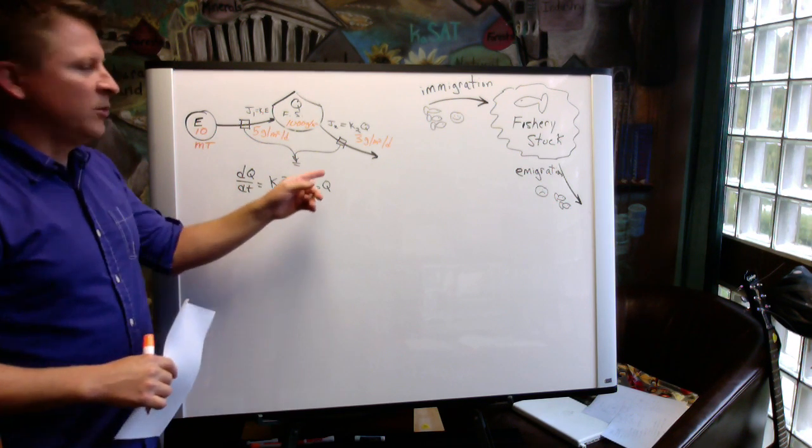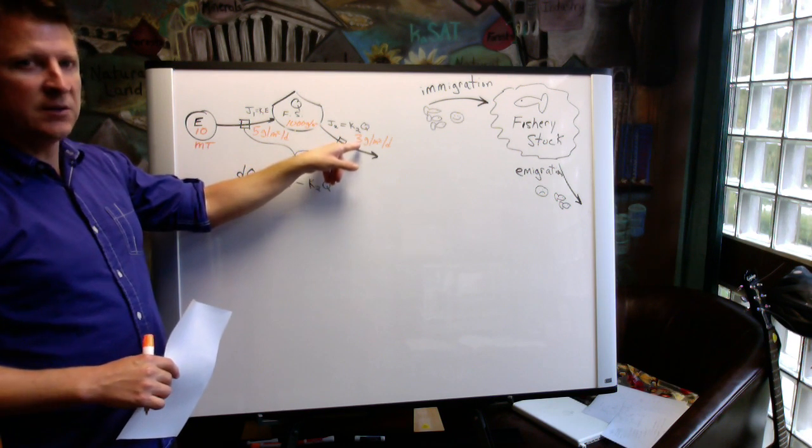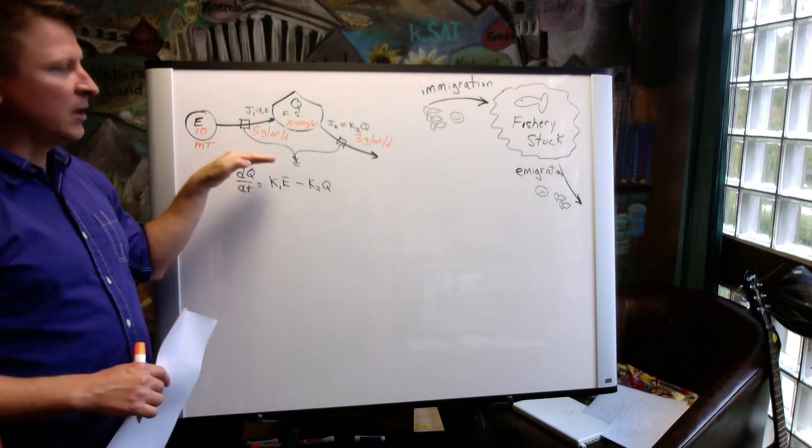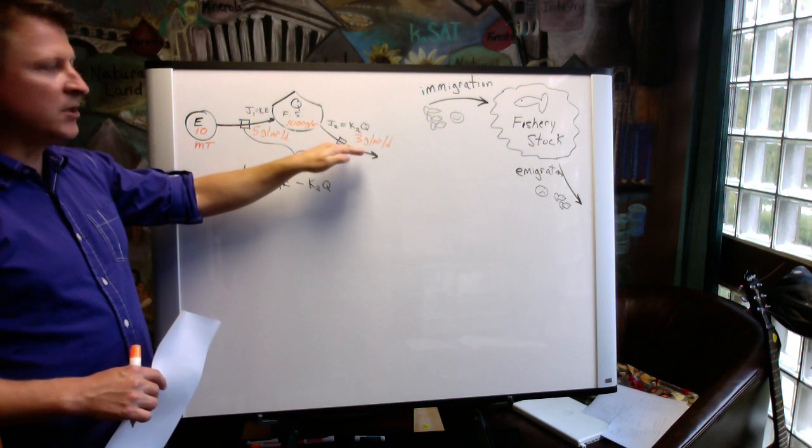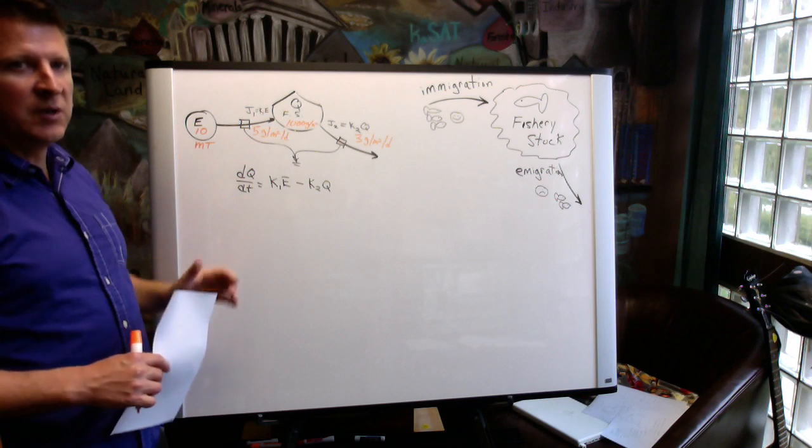But what we need to realize is that this 3 is not constant. These are values that we're using in order to determine what the K values are. So this 3 is going to be changing depending on how much fish we have in Q.